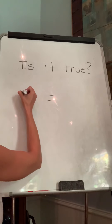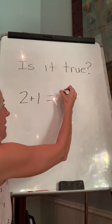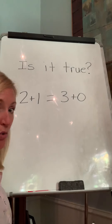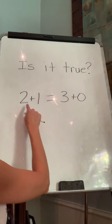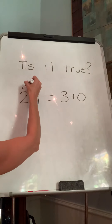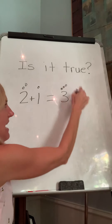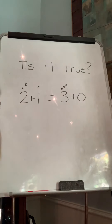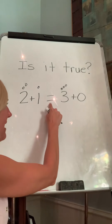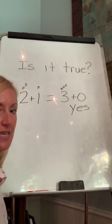So what if I have two plus one, and on this side I have three plus zero. Is that true? Let's check it. Two plus one — it's just the next number: two, three. So we have three on this side. Three and nothing — this is three on this side. So is that true? Is it the same? Yeah, they're equal. So I'm going to put yes.